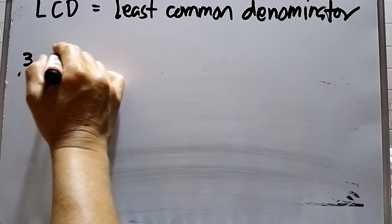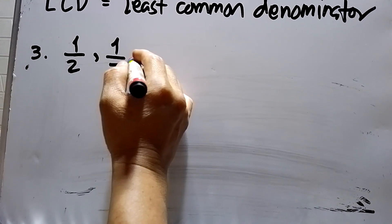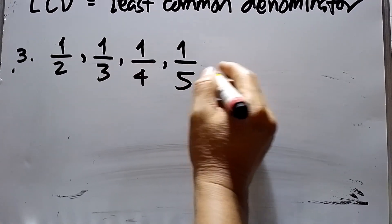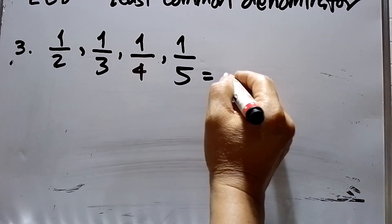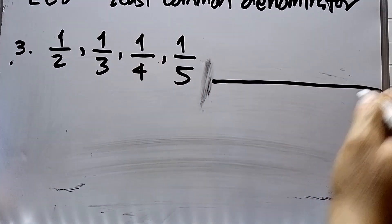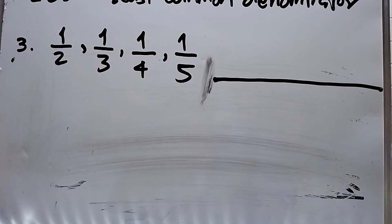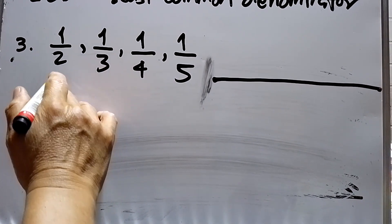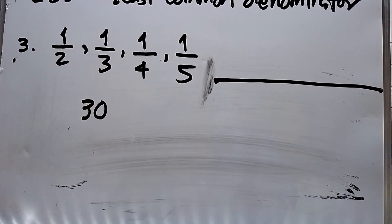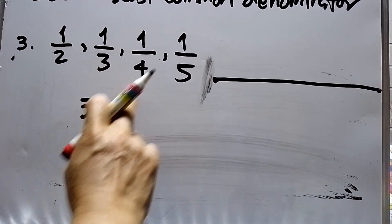Now let's proceed to number three. I have one over two, one over three, one over four, and the last fraction is one over five. We need to arrange these and make similar fractions. The denominators are 2, 3, 4, and 5.